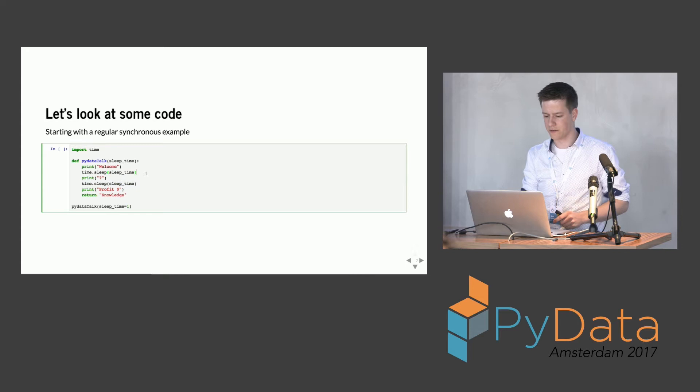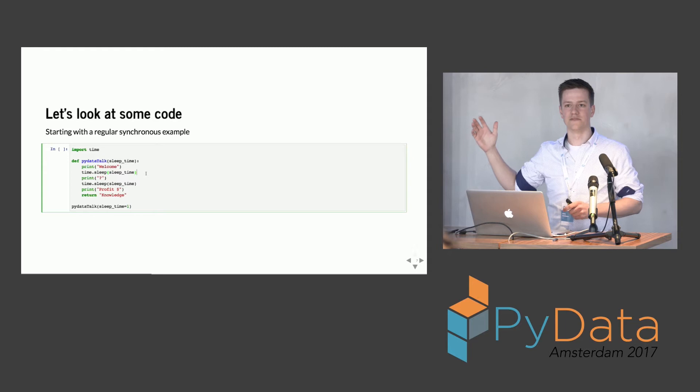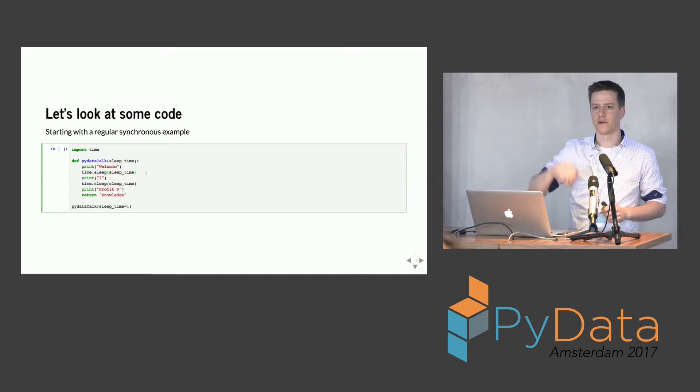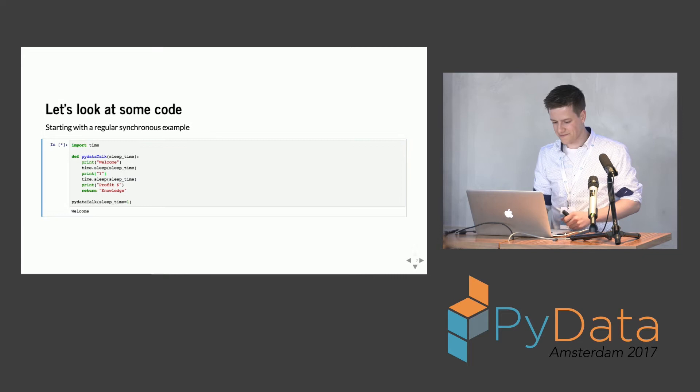Let's look at some code. We'll start with a simple synchronous example of a PyData talk. You'll see it starts with printing 'welcome', then has a sleep period to simulate any IO operation or wait, then 'question mark', 'sleep', 'profit', and hopefully returns knowledge.